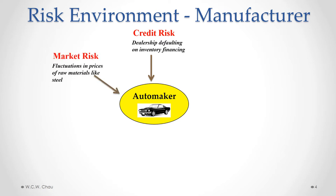A market risk that an automaker could be subjected to — an example would be changes or fluctuations in the prices of the raw materials that the automaker uses in manufacturing cars, and most notably if the price of steel goes up. Steel is a large raw material used in making a car, so that would drive up the cost of making the car.